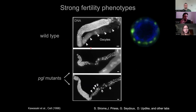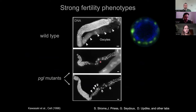We know from a long time ago that mutations in core factors promoting P. granule formation affect germ cell proliferation and differentiation, as we can see in these very atrophied germlines that lack oocytes. This suggests that whatever is happening inside these P. granules might be very important for the function of the germline tissue.